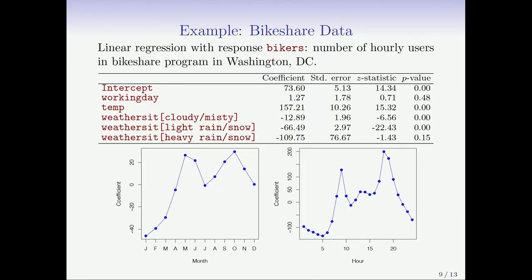We're going to go through a simple example illustrating an important member of this family, which uses Poisson regression. For that, we're going to use the bike share data, a dataset that measures some variables for a bike rental company in Washington, DC. The response is bikers, which is the number of hourly users in the bike share program in Washington, DC.